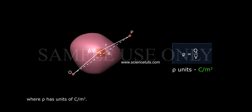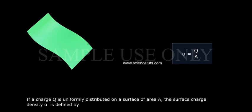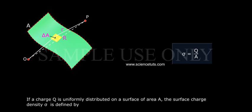If a charge Q is uniformly distributed on a surface of area A, the surface charge density sigma is defined by sigma equals Q by A, where sigma has units of coulombs per meter square.